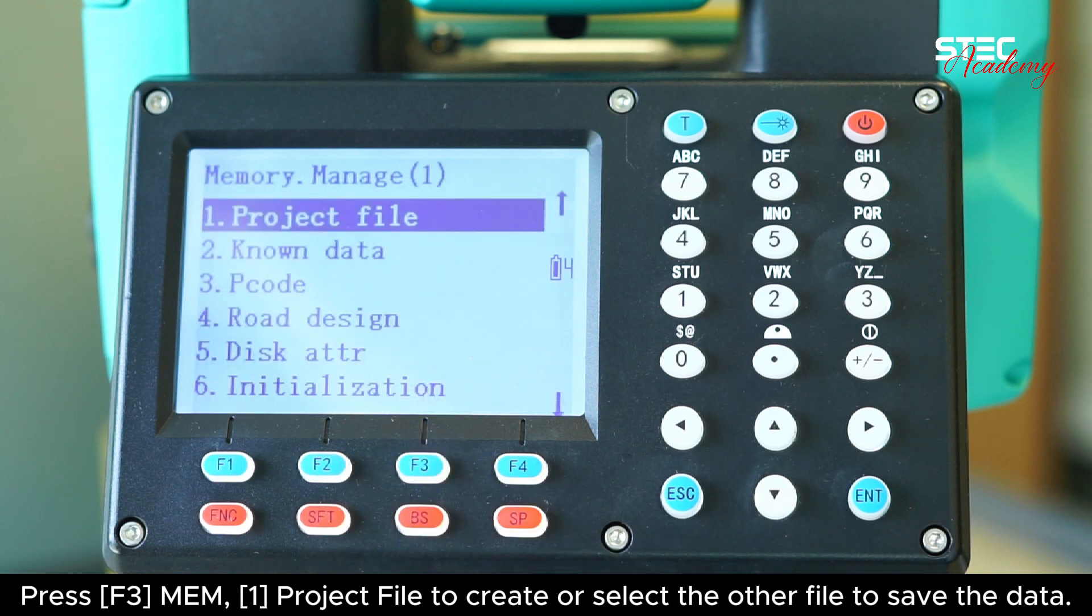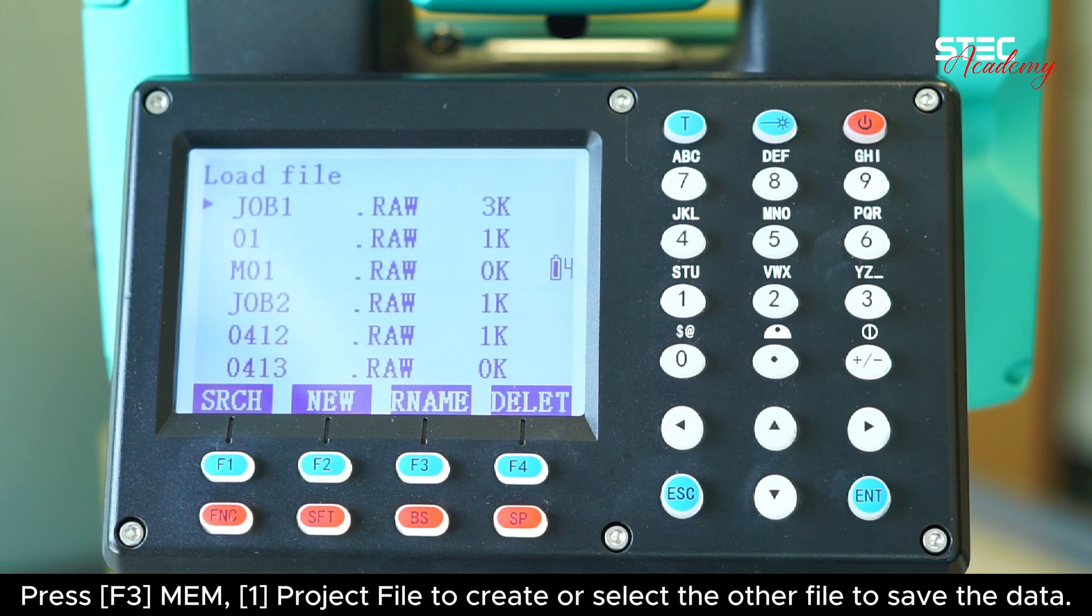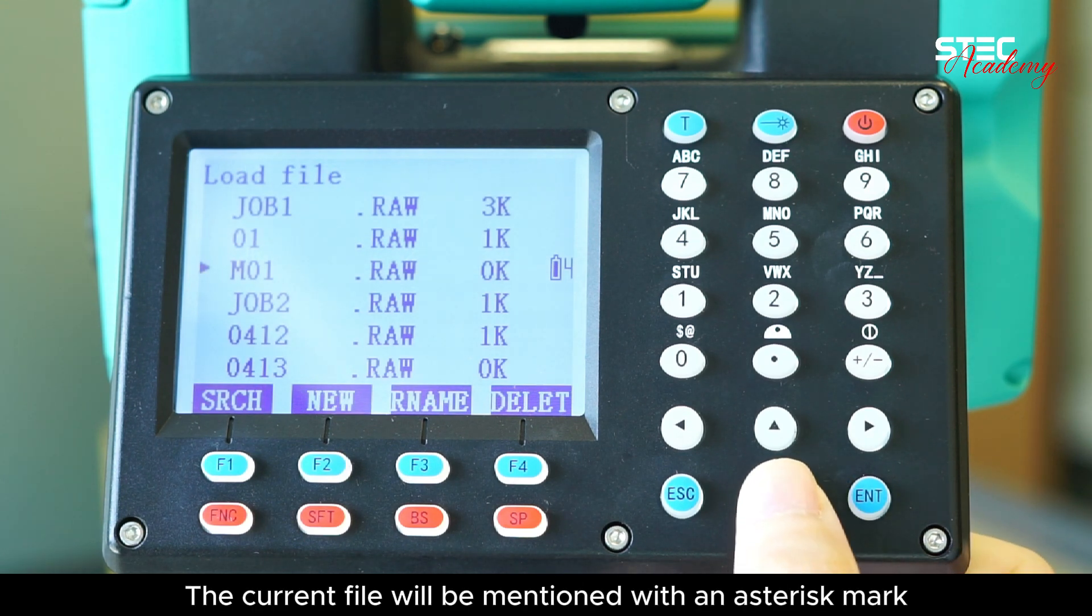Press F3 memory, one project file to create or select the other file to save the data. The current file will be mentioned with an asterisk mark.